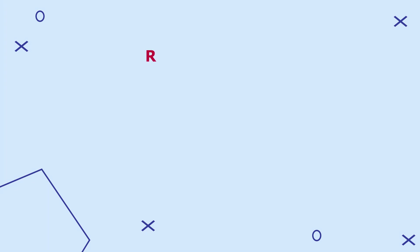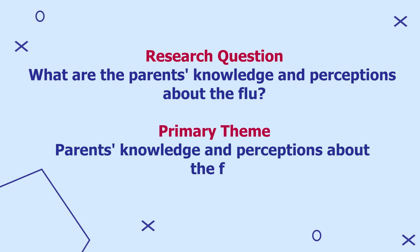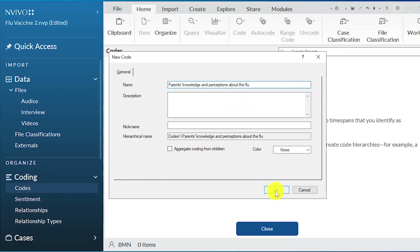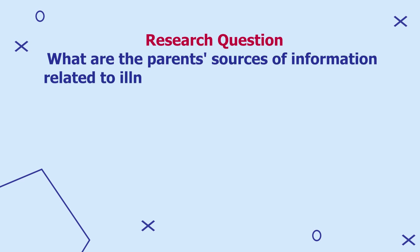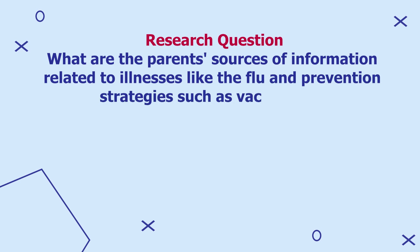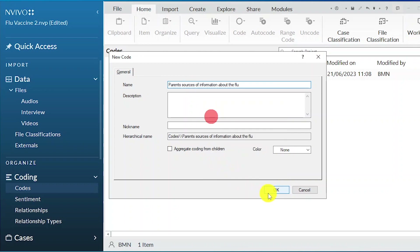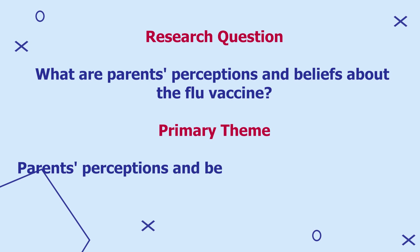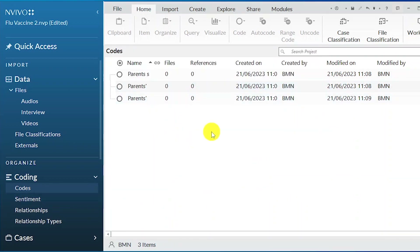I want to create themes from my research questions. From question one, I can come up with a primary theme of parents' knowledge and perceptions about the flu. I right click on the codes area, create a new code, and call it that. From question two, I get the code parents' sources of information about the flu — right click, new code, paste. And from question three, I create the primary theme of parents' perceptions and beliefs about the flu vaccine. Now I have these three primary themes.